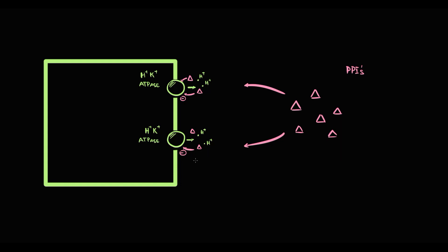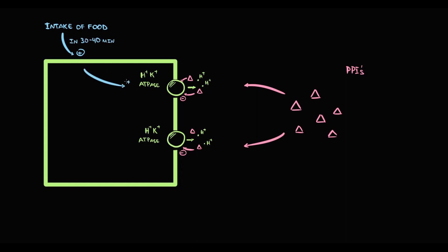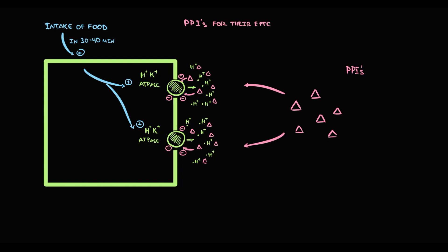But if we consume proton pump inhibitors 30 to 40 minutes before a meal, in that time period food intake will greatly increase the production of hydrogen by hydrogen-potassium ATPase. The higher the amount of hydrogen, the higher the amount of proton pump inhibitors that will come into contact with hydrogen-potassium ATPase, and thereby the more potent will be the inhibition. By this we can greatly potentiate the effect of proton pump inhibitors on gastric secretion. The major concept is that proton pump inhibitors require a lot of hydrogen for their effect, and the maximal secretion of hydrogen can be provoked by food intake.